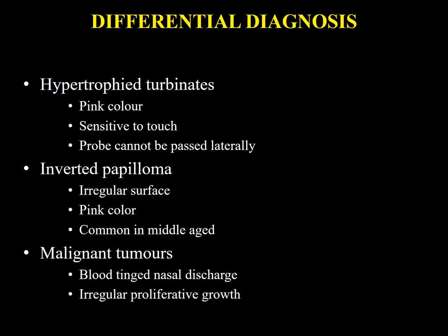Differential diagnosis may include simple hypertrophic turbinates. The turbinates are usually pink and sensitive to touch — this is a very important differentiating point. On probe testing, the probe cannot be passed laterally because the inferior turbinate arises from the lateral nasal wall, whereas the probe can pass all around a polyp.